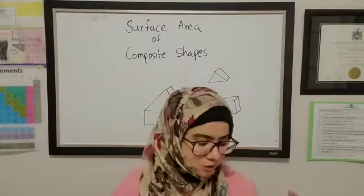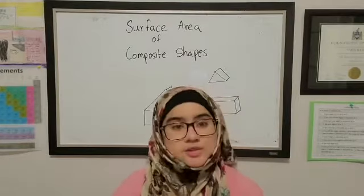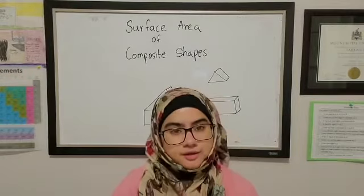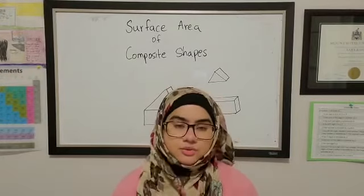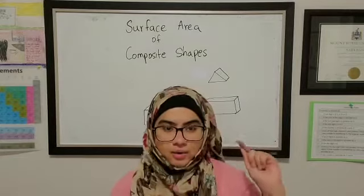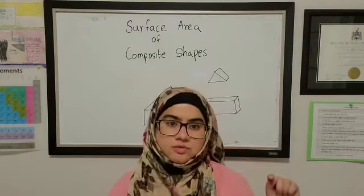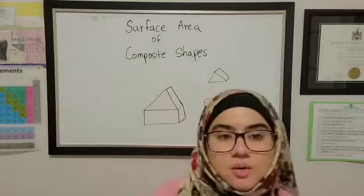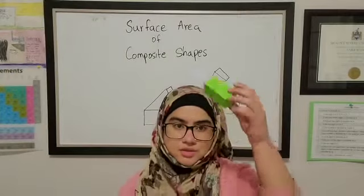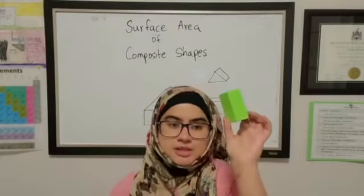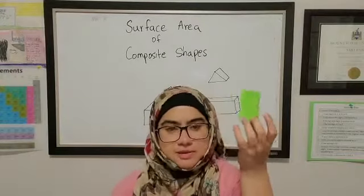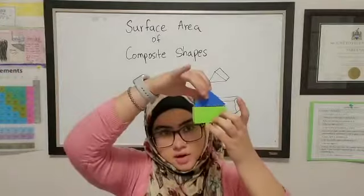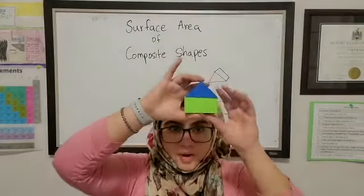Welcome back to my virtual classroom. In my previous video I taught you how to find the surface area of 3D shapes. Our next lesson is about how to find the surface area of composite shapes. We know these are the 3D shapes, and this is a rectangular prism. Composite shapes are when two 3D shapes are attached together.